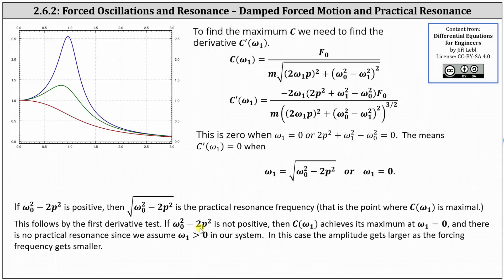If ω_0² - 2p² is not positive, then C(ω_1) achieves its maximum at ω_1 = 0, and there is no practical resonance since we assume ω_1 > 0 in our system. In this case, the amplitude gets larger as the forcing frequency gets smaller.